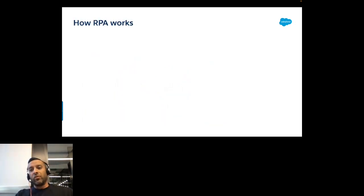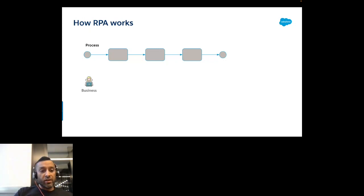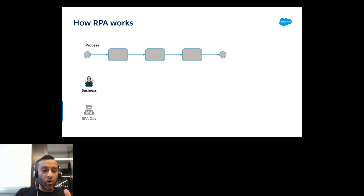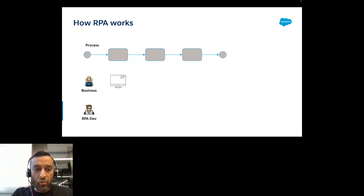So how does RPA work? Someone from business identifies a process to automate because they have the pain with repetitive work and want to improve productivity. They know the business process, but they need specialized technical skill set — specifically an RPA developer — to do UI automation. Business tells the RPA developer the steps: going into SAP order management, getting the order number, going into Salesforce, copying to the opportunity, then into Microsoft.